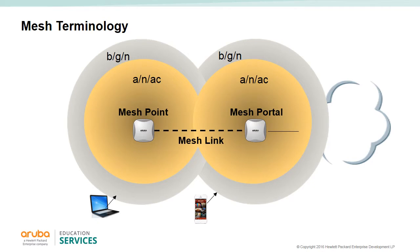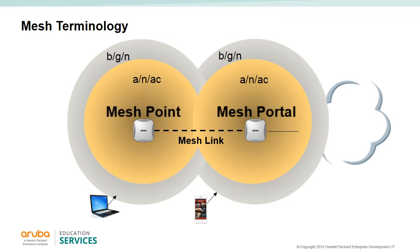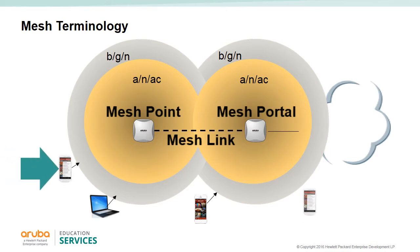To understand mesh, let's define the terminology. A mesh portal is an IAP that has a wired uplink into the network. A mesh point is an IAP that is not wired into the network but is using a radio link to the mesh portal as an uplink to the network. This radio uplink is called a mesh link. If the mesh link has been configured to use the 5 GHz radio, then traffic between the mesh IAPs uses this band.